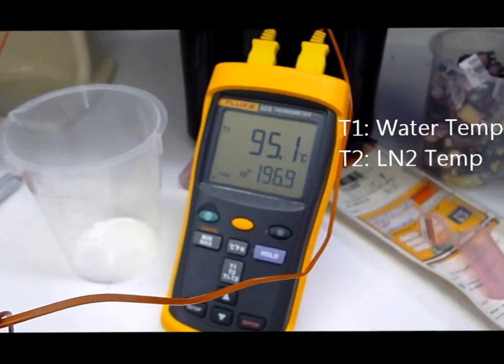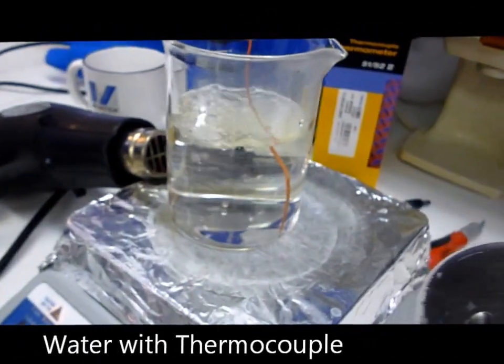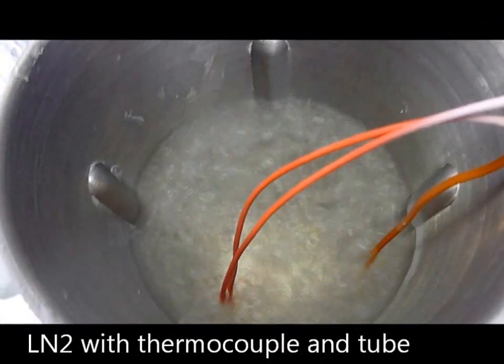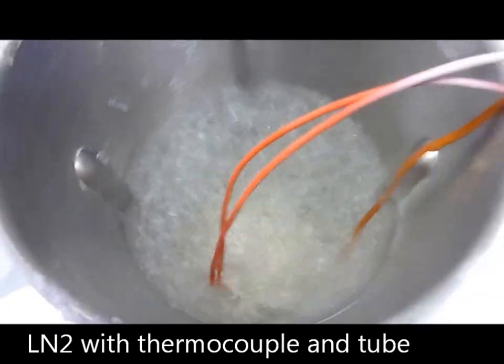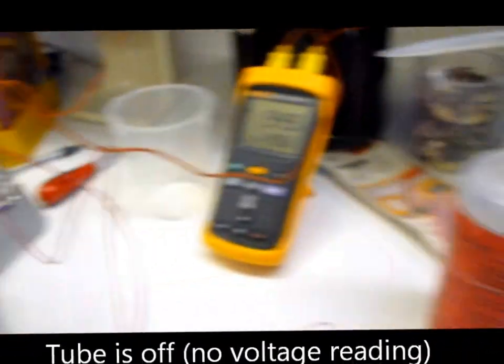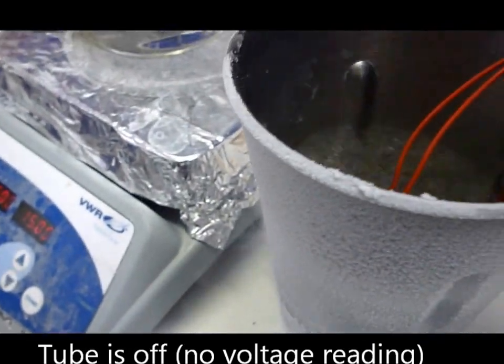Alright, so we're at Utah boiling point. As you can tell, the water's boiling. The tube has been resting for five or six minutes just in the liquid nitrogen with no filament on. As you can tell, the power is not on. So what we're going to do is take the tube out and dunk it...